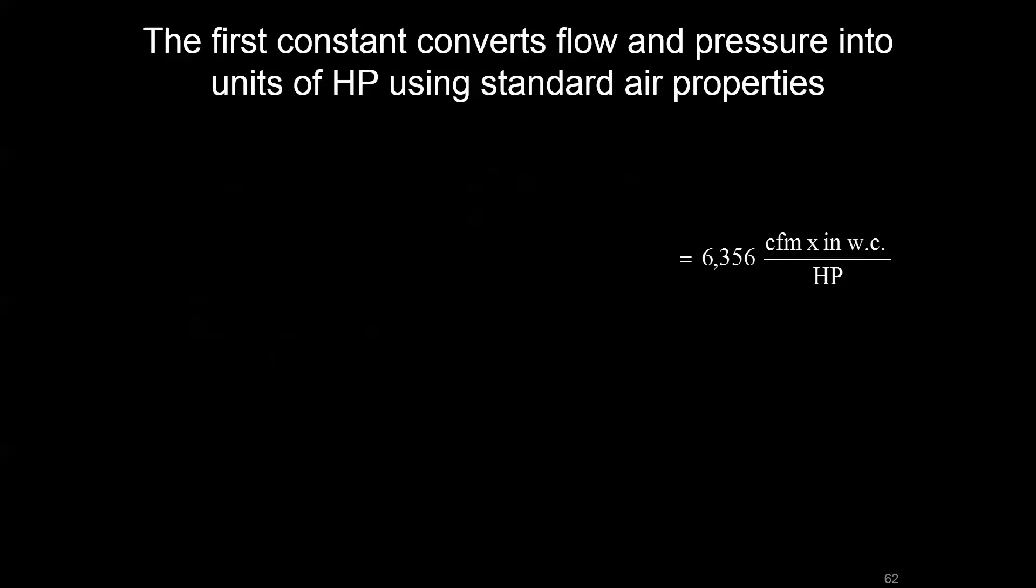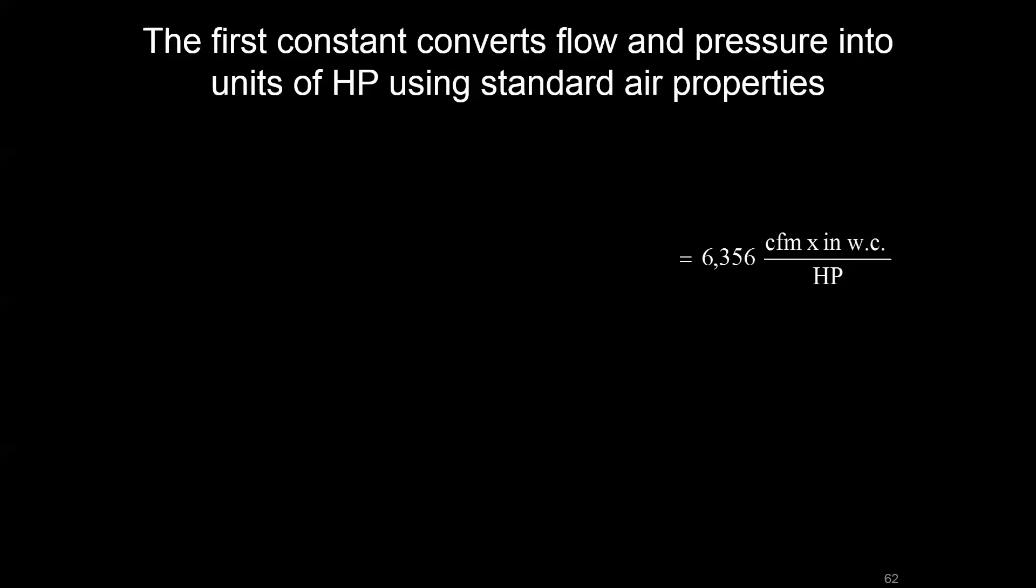Same story again with the conversions for power, we just have a slightly different one for air versus water. So this 6356, that is a way for us to plug in the key operating parameters—CFM and inches of water column—and get horsepower out of that particular conversion. We start with this power conversion from foot-pounds per hour to horsepower, do a pressure conversion from PSI to inches of water column, a conversion from square feet to square inches, and then have this time conversion so we can deal with CFM.